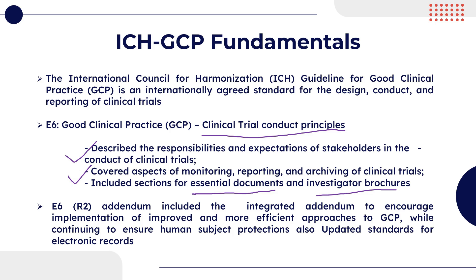Then we have E6 R2 — revision 2 — the E6 R2 addendum. This R2 addendum contains the integrated addendum to encourage an efficient approach to good clinical practices, as well as to ensure that human subjects are protected very well, and it updated the standards for electronic records. So now we have the E6 R3 addendum — the draft guidelines. You need to know what happened in E6 R2 as well, as this could be one of the most important questions when it comes to differentiating between E6 R2 and R3.